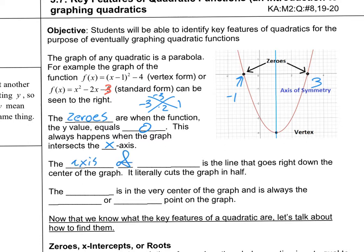The axis of symmetry is a line that goes right down the center of the graph. It's like a folding line — if you were to fold the parabola along it, the two sides would match up perfectly. It cuts the graph exactly in half.